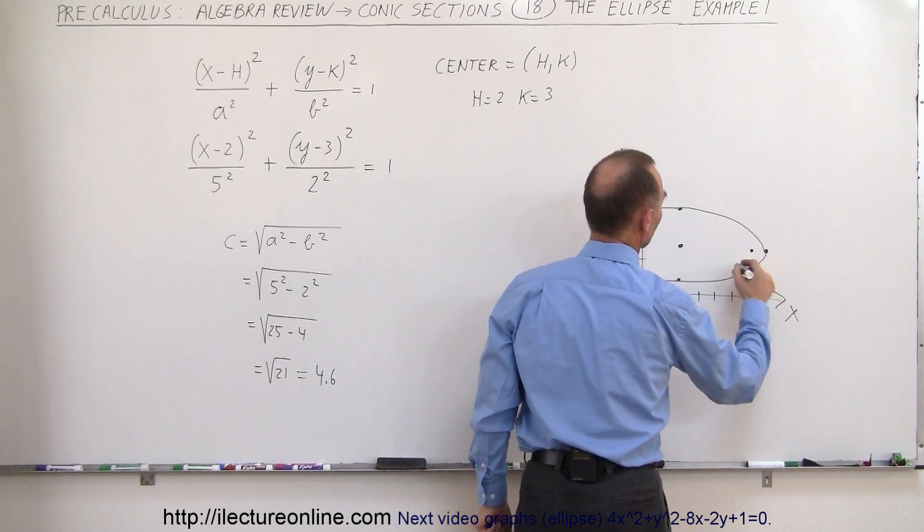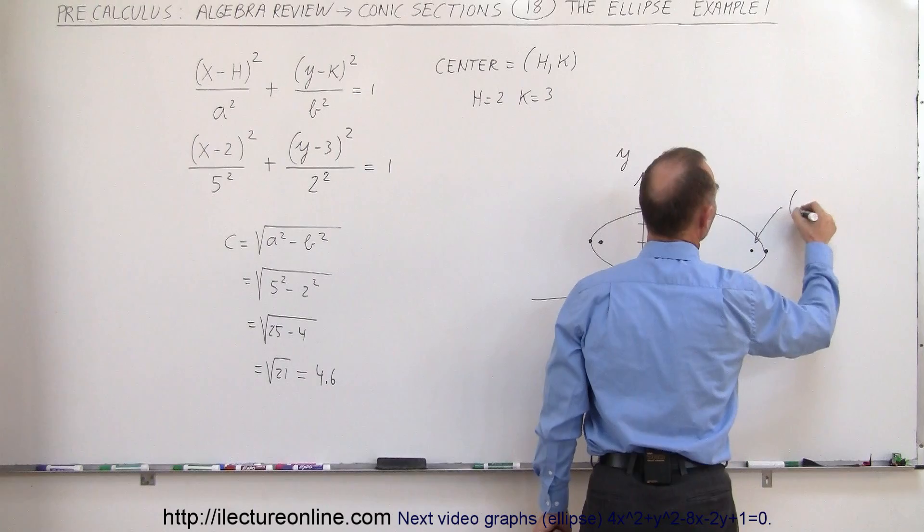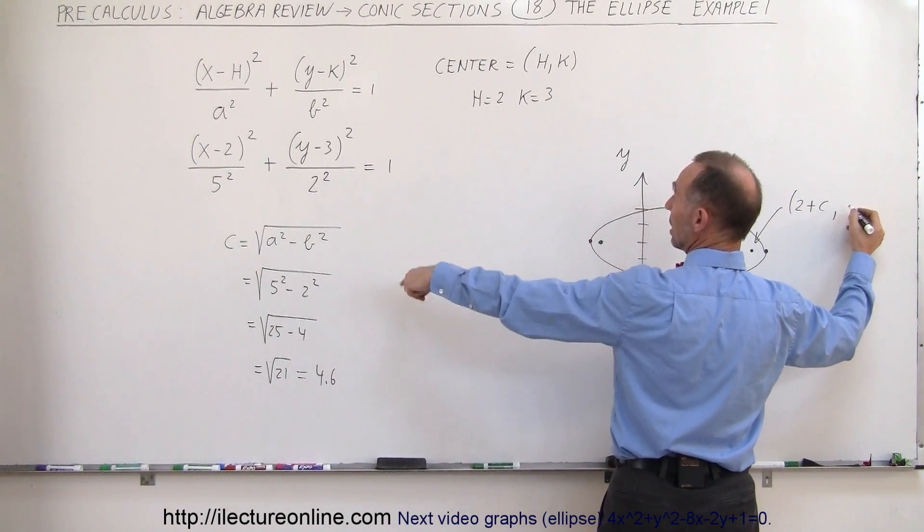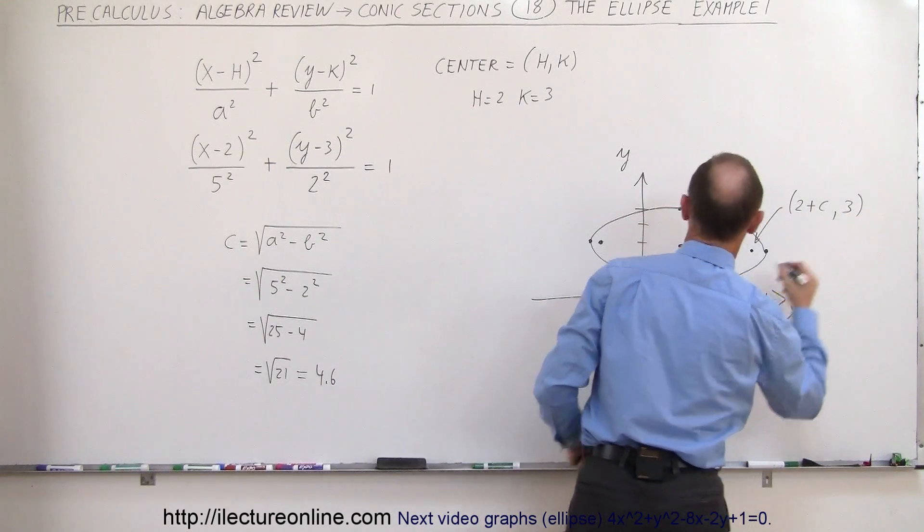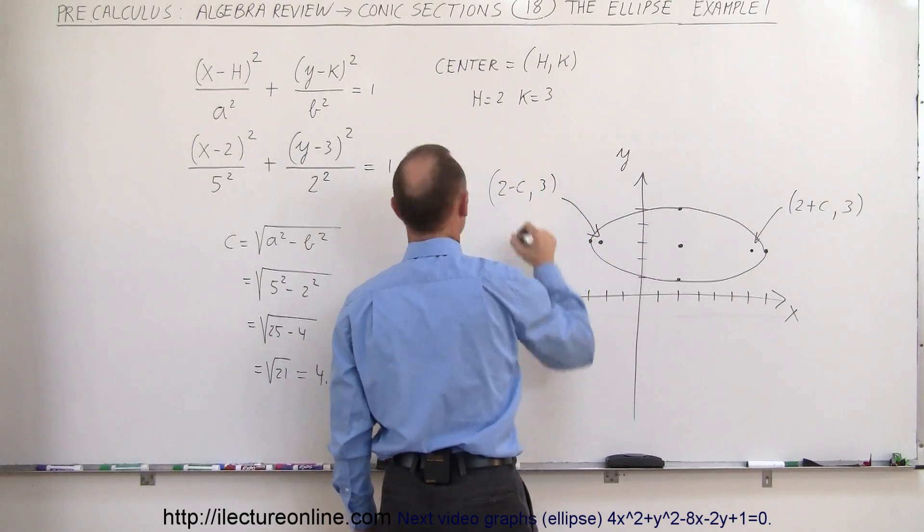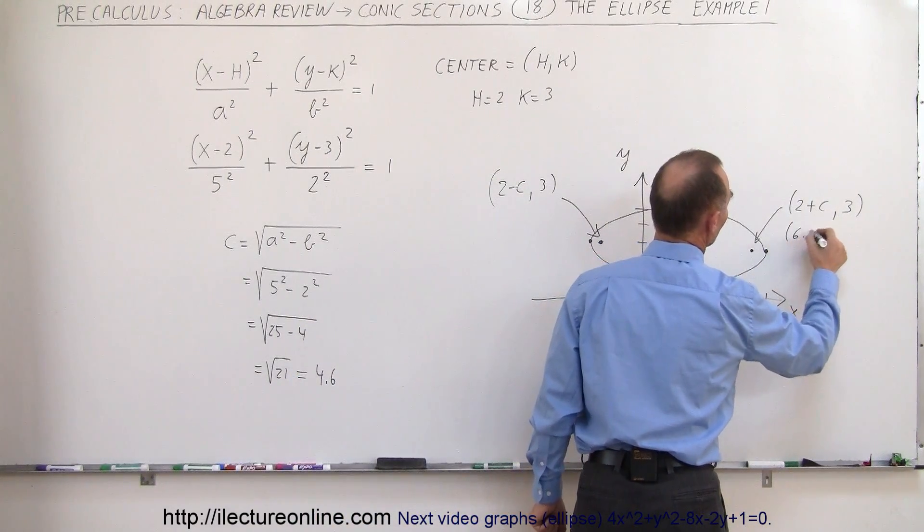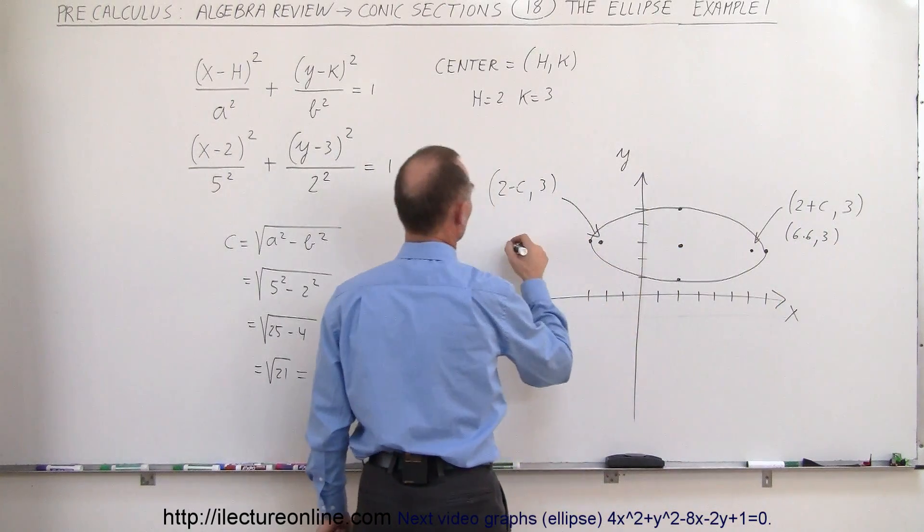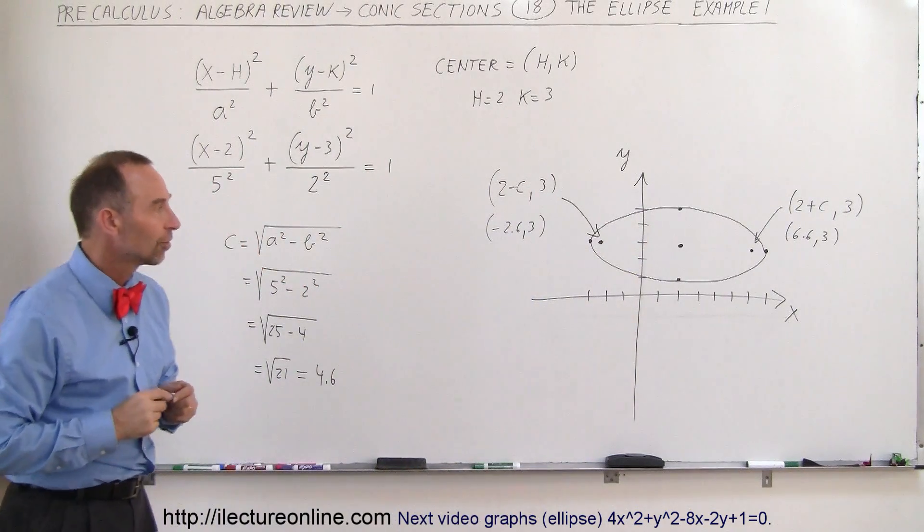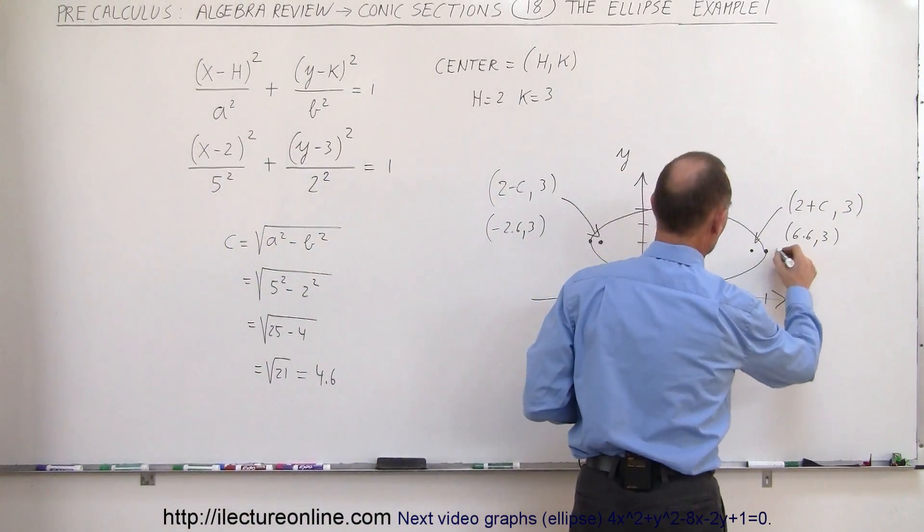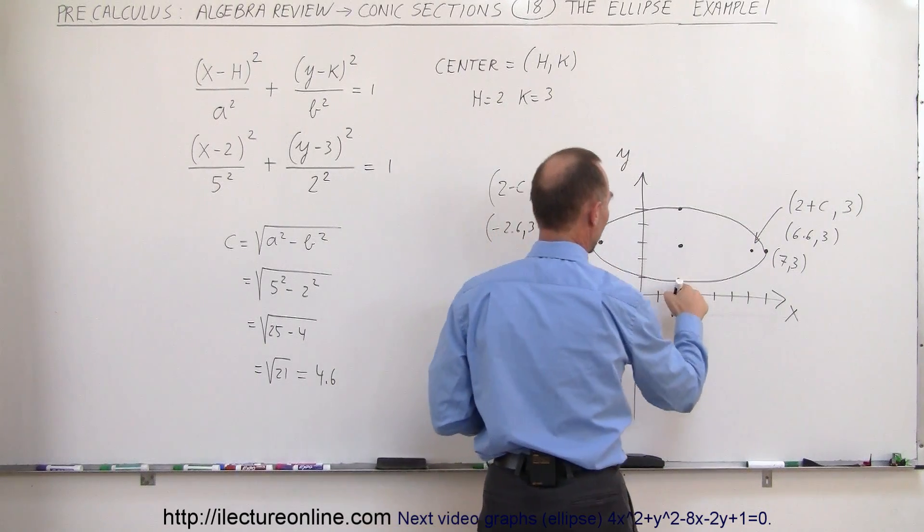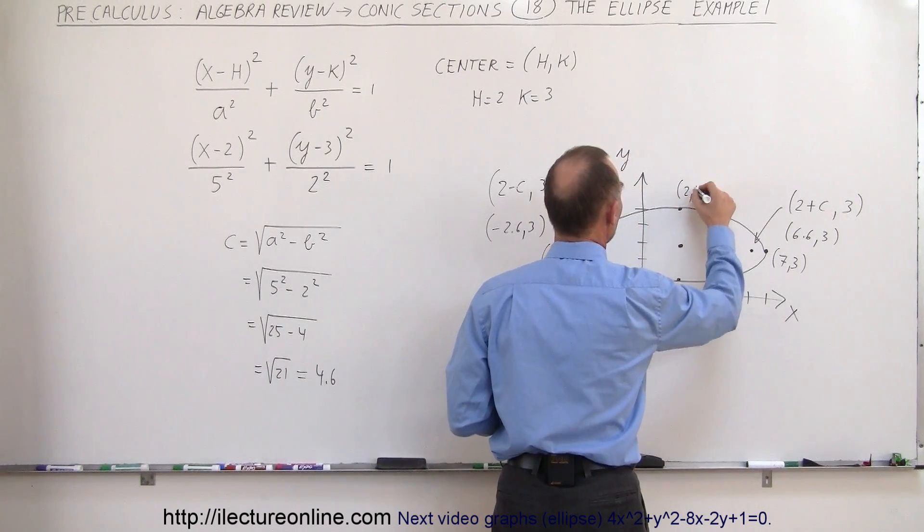So that would be the two foci. So this would be the position of the foci would be equal to, that would be in the horizontal direction, would be 2 plus c and k would be equal to 3. And this would be the focus over here, would be 2 minus c and 3. And of course, since c is 4.6, that would be at 6.6 and 3, and this would be 2 minus 4.6 or minus 2.6 and 3, would be the two places where you can find the foci of the ellipse. And just to make sure we understand where these are at, this is at 7 and 3, and this would be at minus 3 and 3. And then this point right here would be at 2 and 1, and this one would be at 2 and 5.